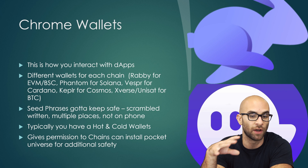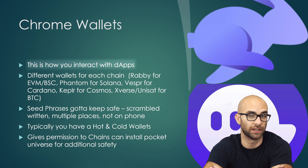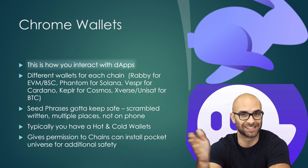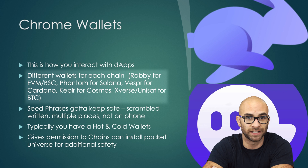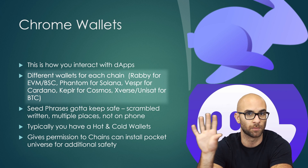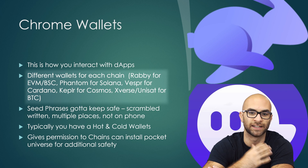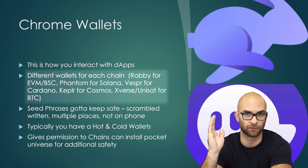Once you have a centralized exchange account and it's funded, you're going to need a Chrome extension wallet. These wallets are how you interact with the different dApps. A lot of the main blockchains can use just one wallet called Rabby. There's also MetaMask as an alternative, but I personally think Rabby is a hundred times better. For other blockchain ecosystems, it's important to look up some guides because they might need a completely different wallet.